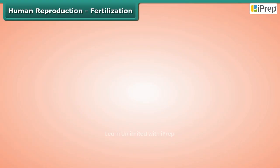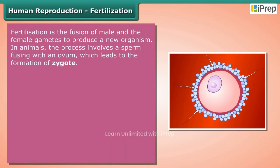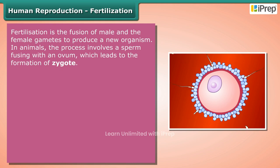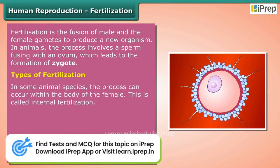Human reproduction: fertilization. Fertilization is the fusion of male and female gametes to produce a new organism. In animals, the process involves a sperm fusing with an ovum, which leads to the formation of a zygote.